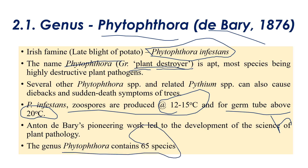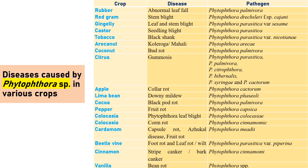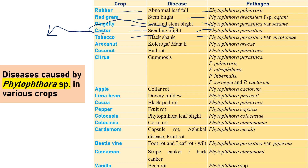The genus Phytophthora contains 65 important species. Diseases caused by Phytophthora species include: rubber abnormal leaf fall — Phytophthora palmivora; red gram stem rot — Phytophthora drechsleri f. sp.; gingelly leaf and stem blight — Phytophthora parasitica var. sesami; castor seedling blight — Phytophthora parasitica, discovered by Indian scientist J.F. Dastur; tobacco black shank — Phytophthora parasitica var. nicotianae; areca nut koleroga/mahali disease — Phytophthora arecae; coconut bud rot — Phytophthora palmivora; and citrus gummosis.